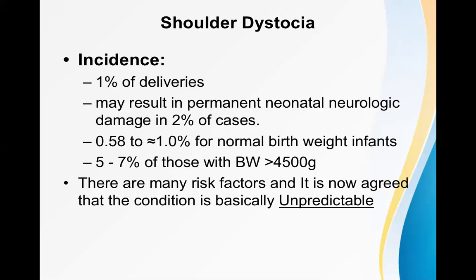Regarding the incidence of shoulder dystocia, it occurs in about 1% of deliveries worldwide. It may result in permanent neonatal neurological damage in 2% of cases. This is because it may cause obstructed labor — until the chest is delivered the baby cannot breathe, as the chest is still inside the birth canal. Because of permanent hypoxic damage to the brain, there is a chance of neurological damage.